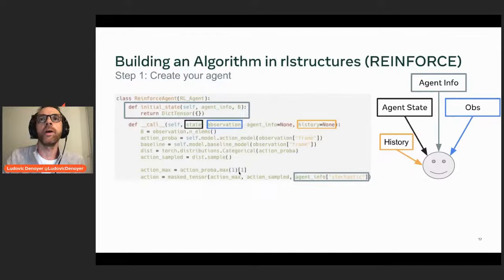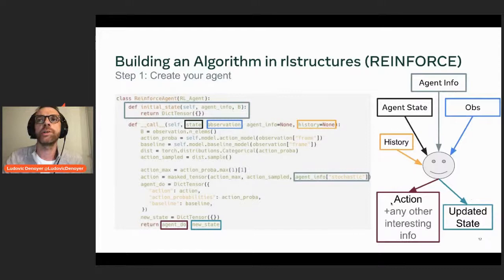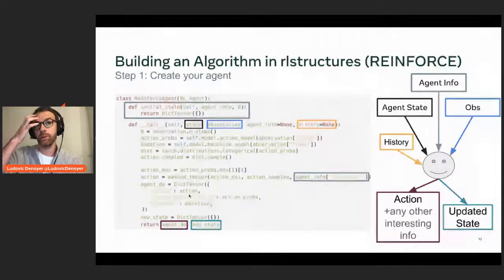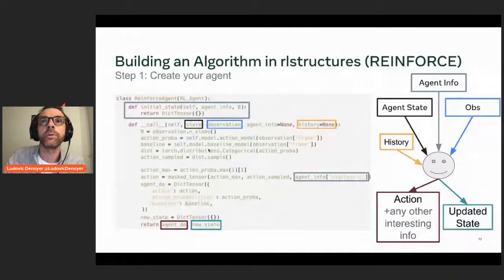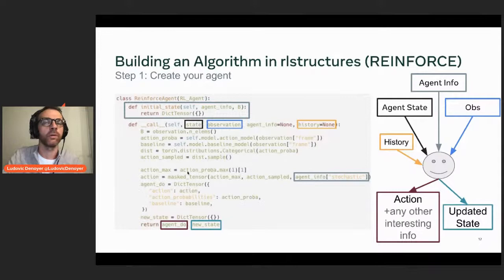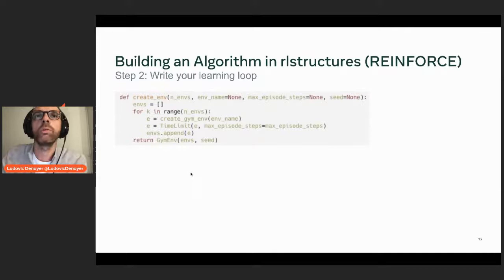As output you produce two values: the action, which is a set of tensors sent back to the environment, and the updated state of your agent, which will be used when you call the agent again. This is the class you need to define to implement a policy. Here it's a simple policy based on a neural network for REINFORCE: two neural networks, one for computing action probabilities and one for computing the baseline. In stochastic mode you sample actions; in deterministic mode you take the argmax over the probabilities.